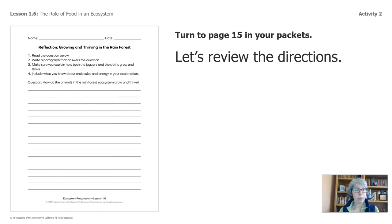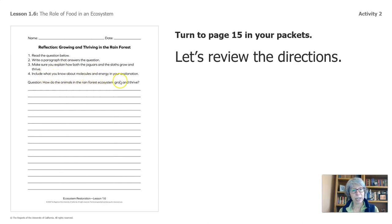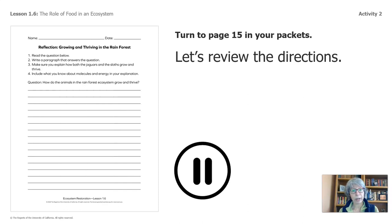The question is: how do the animals in the rainforest ecosystem grow and thrive? I know there are a lot of blank lines here, and that always makes me pause a bit. So I return to my set of directions — what's really helpful is that it reminds me what I need to include. Three says: make sure you explain how both the jaguars and sloths grow and thrive, so I know I need to include them. And then: include what you know about molecules and energy in your explanation, so I need to make sure I use these words. Pause the video and make a rough draft of your answer. How do the animals in the rainforest ecosystem grow and thrive? See you in a bit.